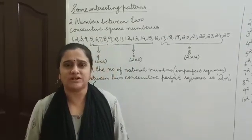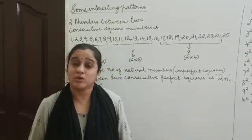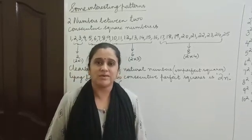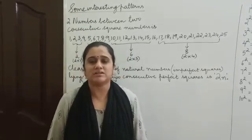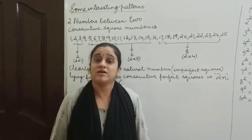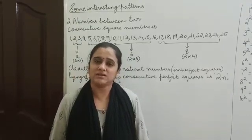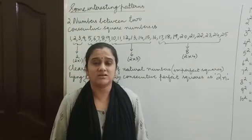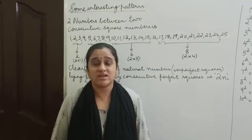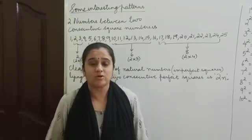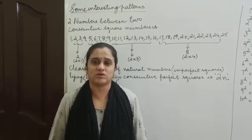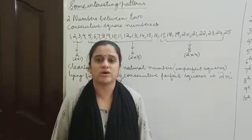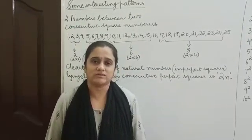So like this you can give infinite examples. Then what is an imperfect square? If a number cannot be expressed as a square of some other natural number, then that number is an imperfect square. For example, 90 cannot be expressed as a square of some other natural number. Hence, 90 is not a perfect square — it is an imperfect square.